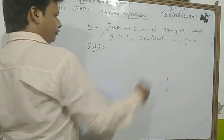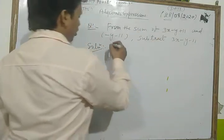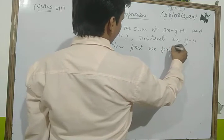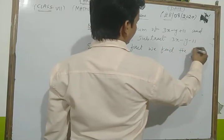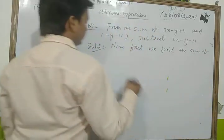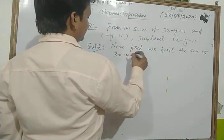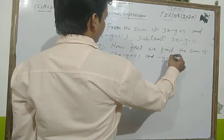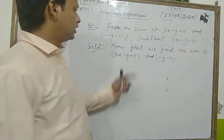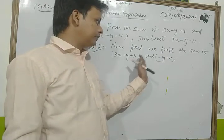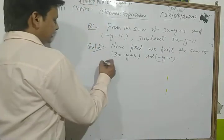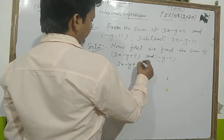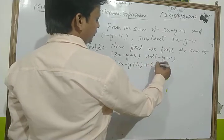Dear students, first of all we find the sum. We find the sum of 3x minus y plus 11, and minus y minus 11. We write them as: 3x minus y plus 11, then we break the bracket to get minus y minus 11.